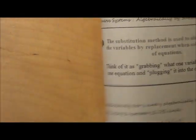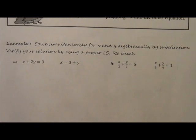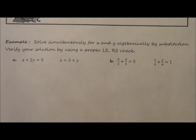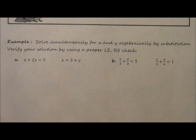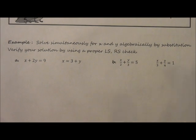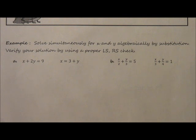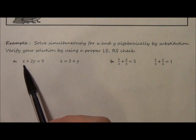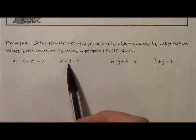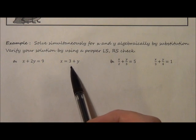So now if we were to then continue with this, in our example, we look at example a. We're going to solve simultaneously for x and y algebraically by substitution, and then we're going to verify the solution by using a proper left side, right side check. So we've got one equation, which is x plus 2y equals 9, and another equation, which is x equals 3 plus y.